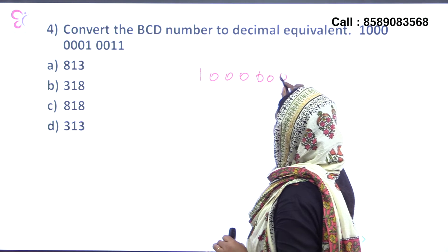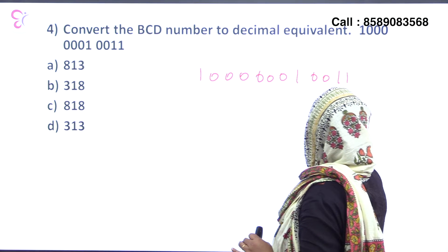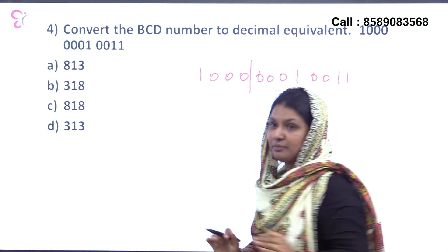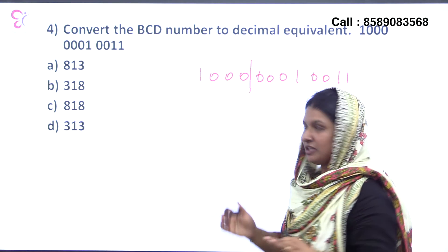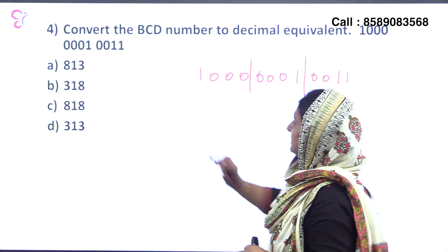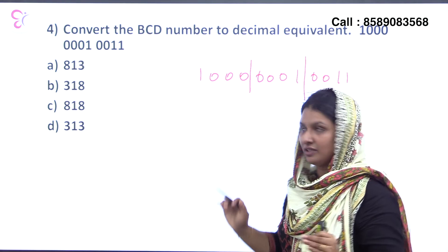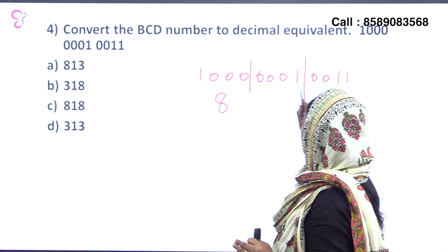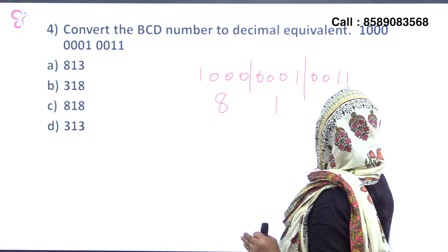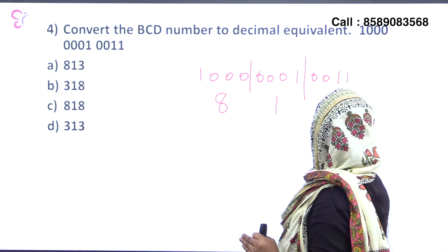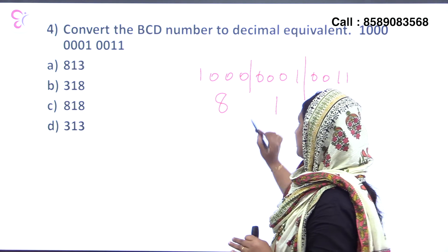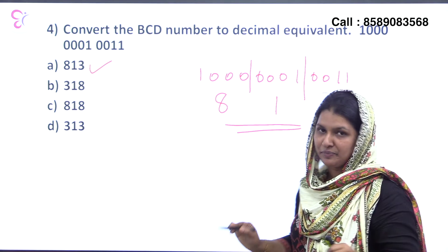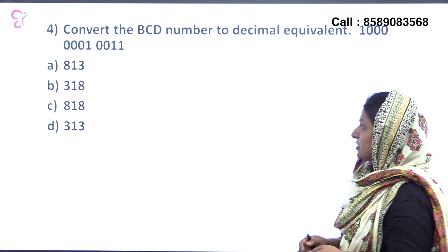In the binary representation, we get 00010011. We separate this into 4-digit groups. The group 1000 corresponds to decimal 8, 0001 corresponds to 1, and 0011 corresponds to 3. So we get 8, 1, 3.